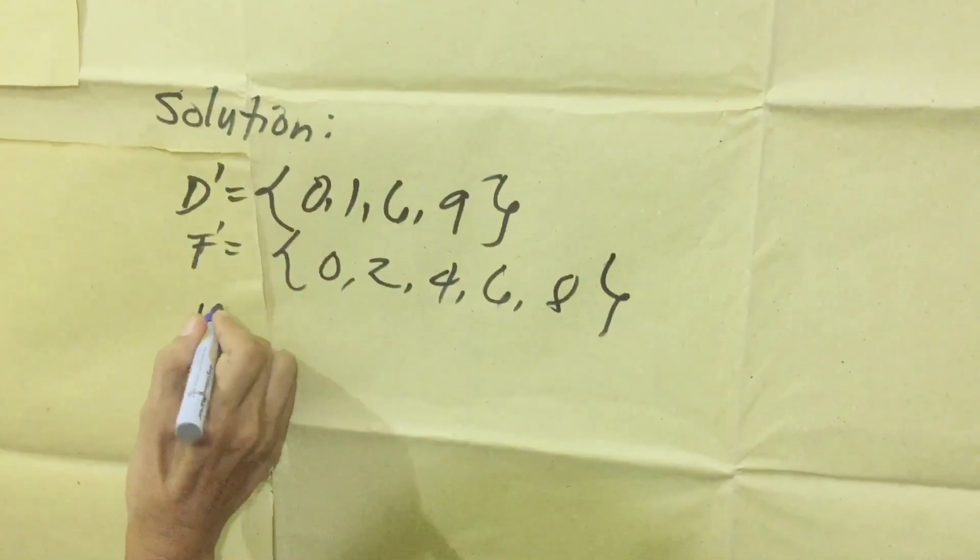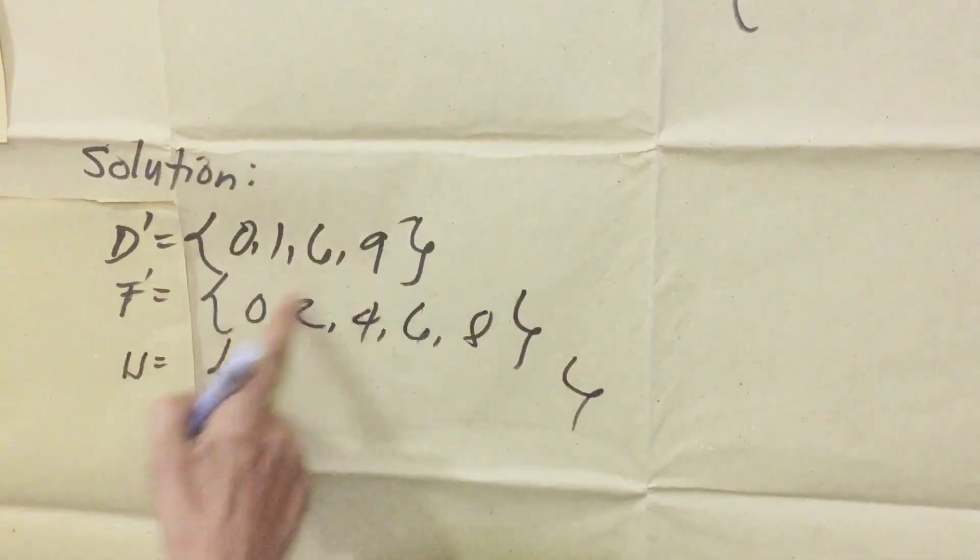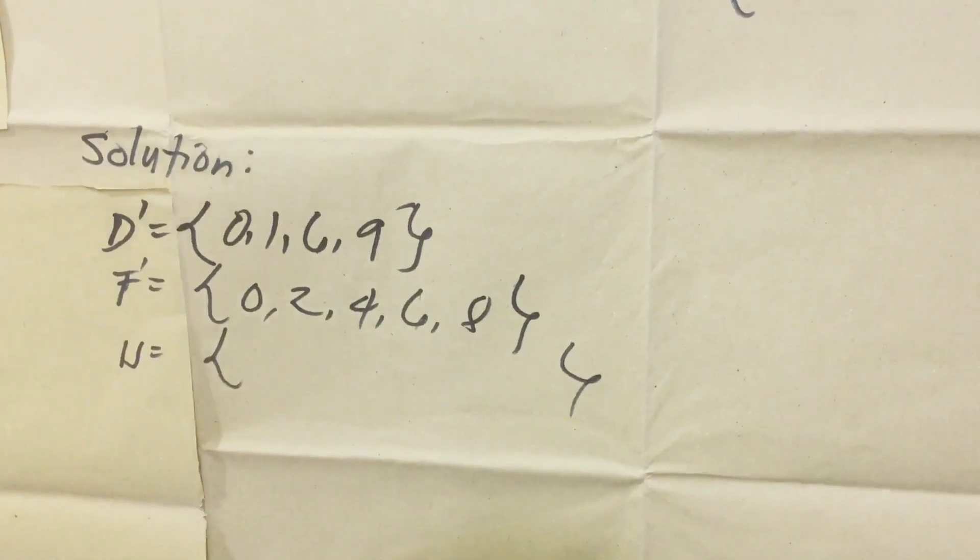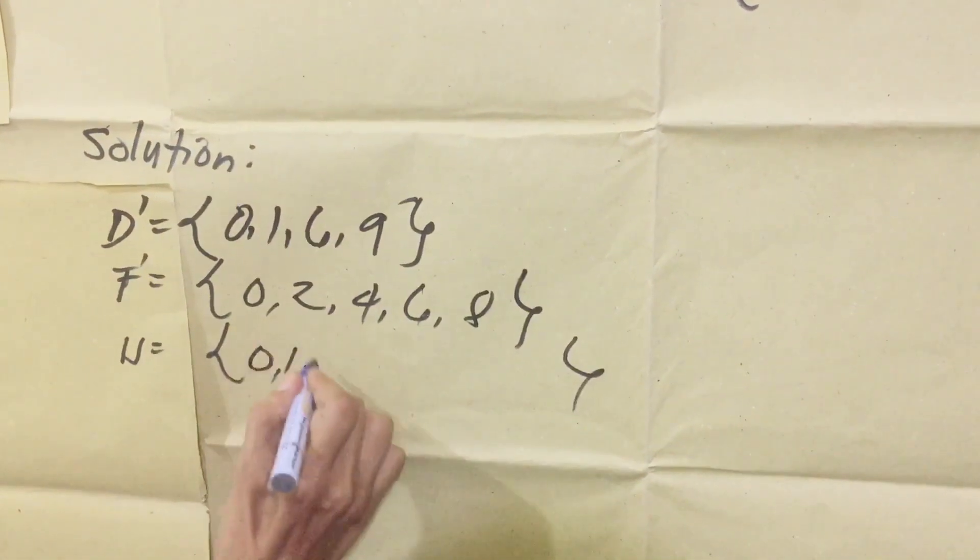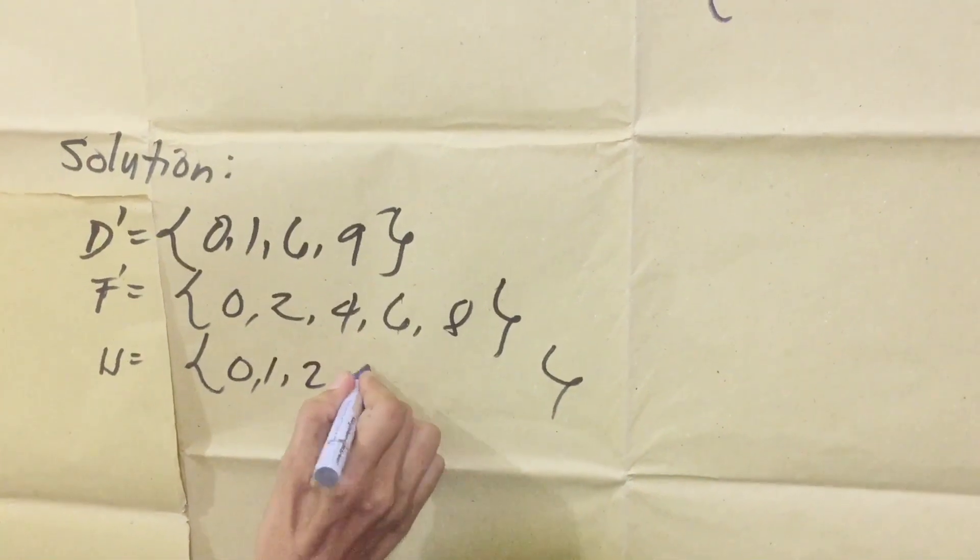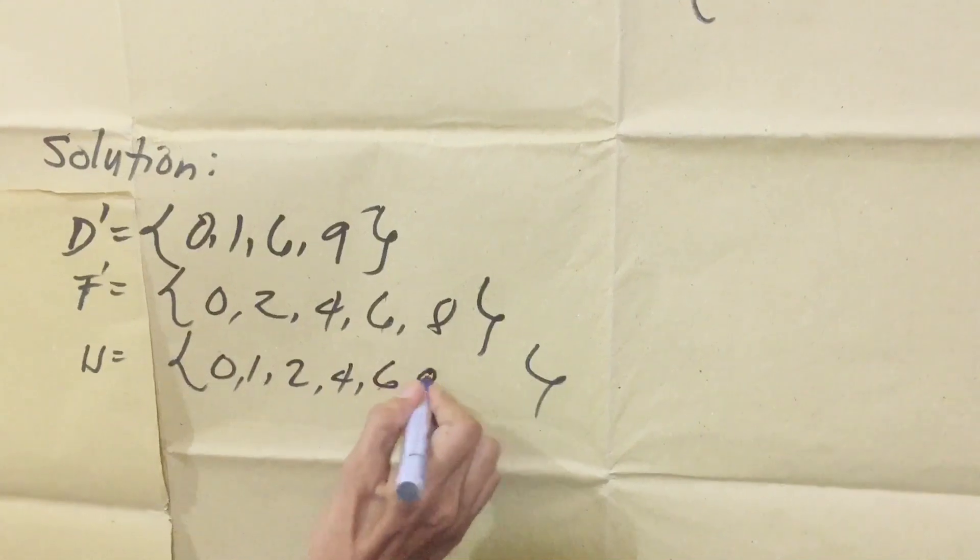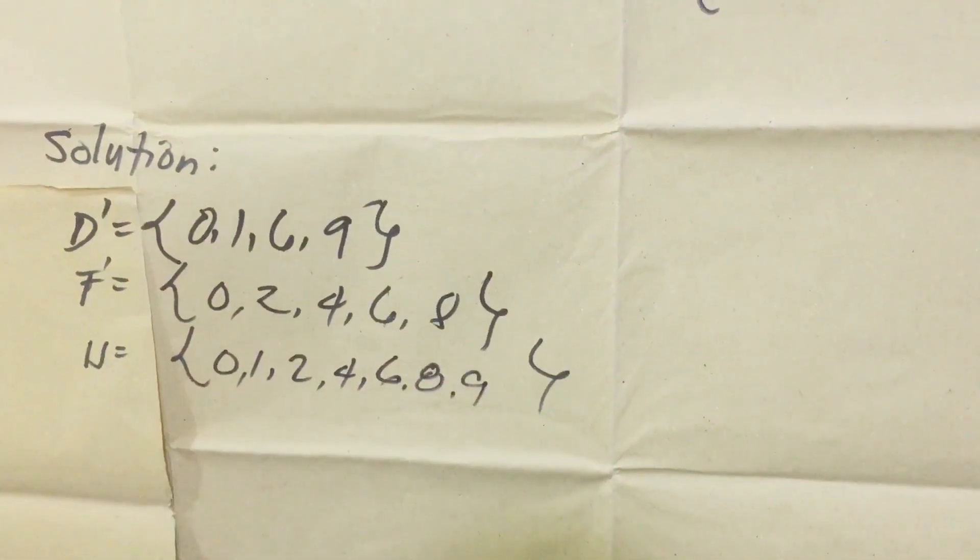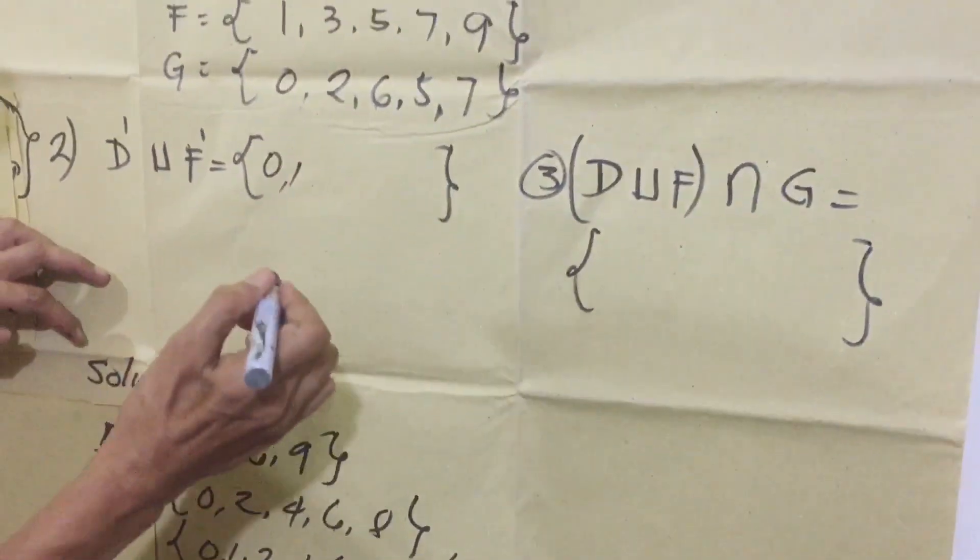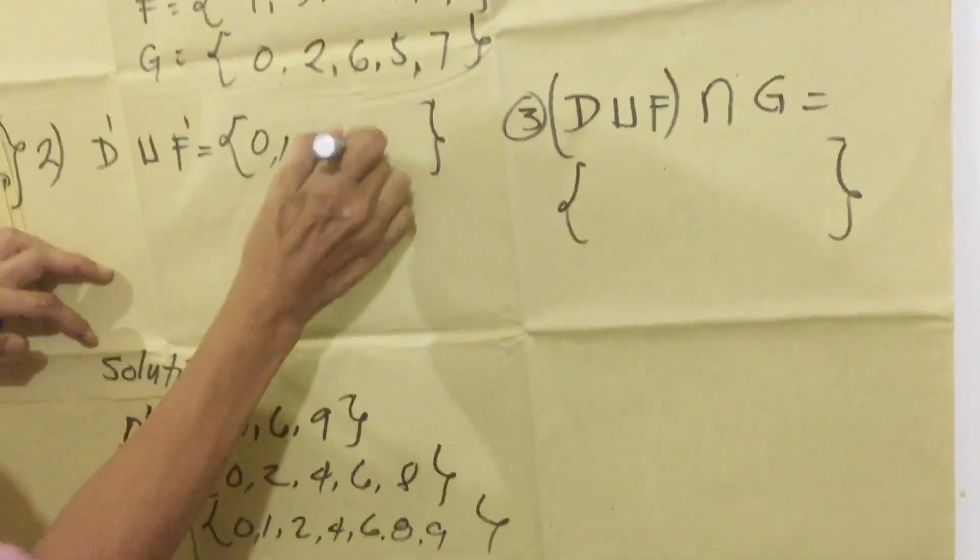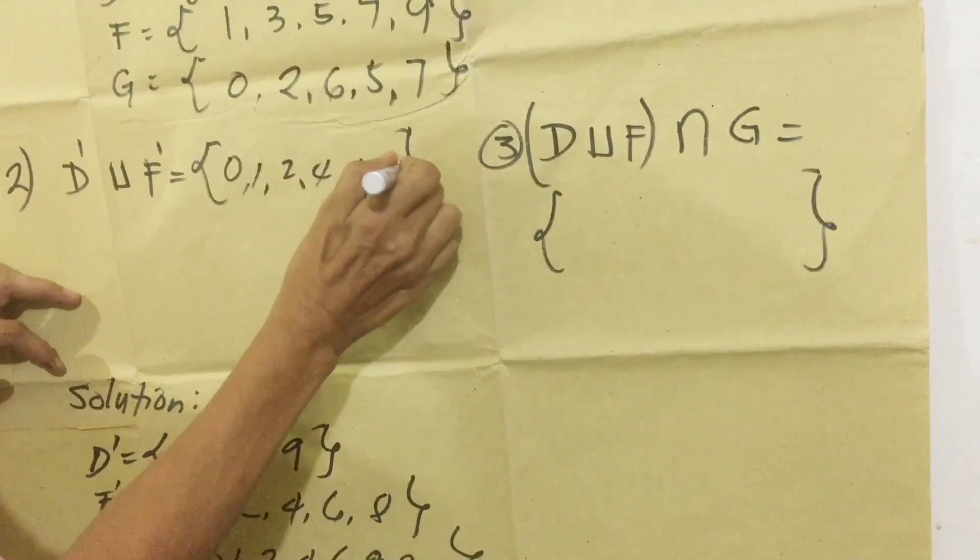Tapos, i-union natin siya. So ibig sabihin, itong dalawang, itong mga elements na ito, ay pagsasamahin natin. Start tayo sa 0, 1, 2 wala. 3, 4 meron. 6 meron. Then 8 meron. Then 9. Ito ngayon yung sagot natin: 0, 1, 2, 4, 6, 8, and 9.